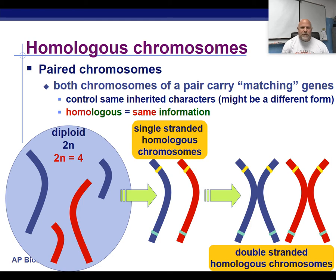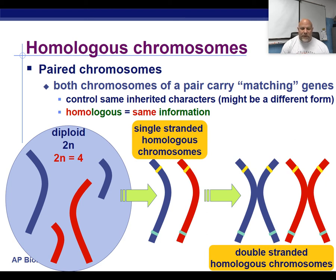Every sexually reproducing organism is going to have homologous chromosomes, and these homologous chromosomes are going to be the key to creating some variation in species.